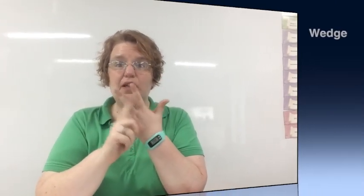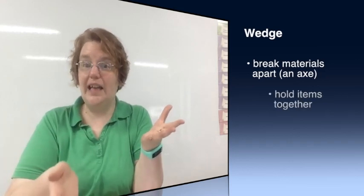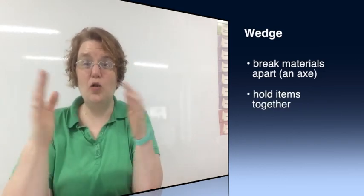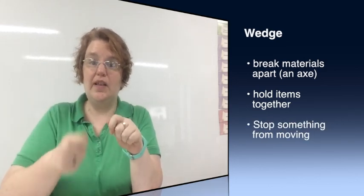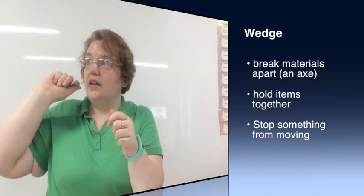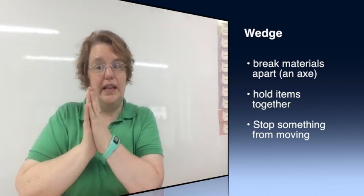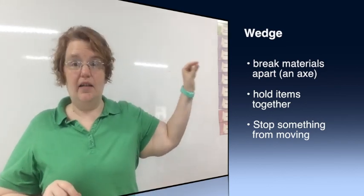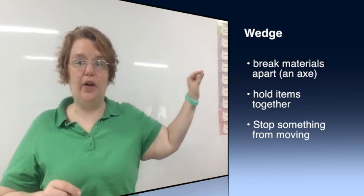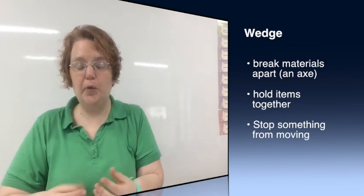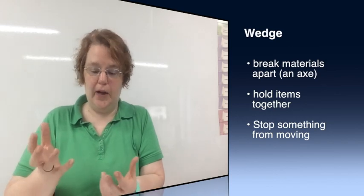So there's three ways we can use a wedge. First one, of course, to break something apart like an axe. Second is to hold two things together. For instance, if we want to nail two pieces of wood together or screw or nail something into the wall. It holds it together. Also, a tack on a cork board is also considered a wedge. It's holding a piece of paper to the cork board. And then the third way is to stop something from moving.